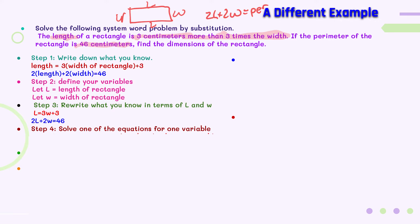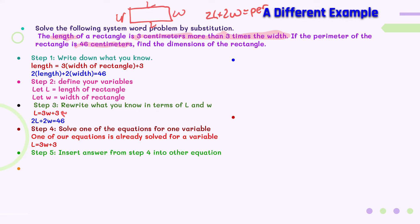Step four: solve one of the equations for one variable. One of our equations is already solved for a variable — L equals 3W plus 3 is already solved for L. Step five: insert that answer into the other equation. So I get 2 times the quantity of 3W plus 3, plus 2W, equals 46.